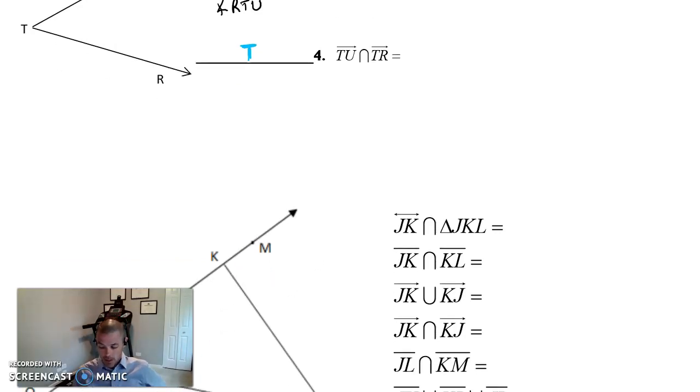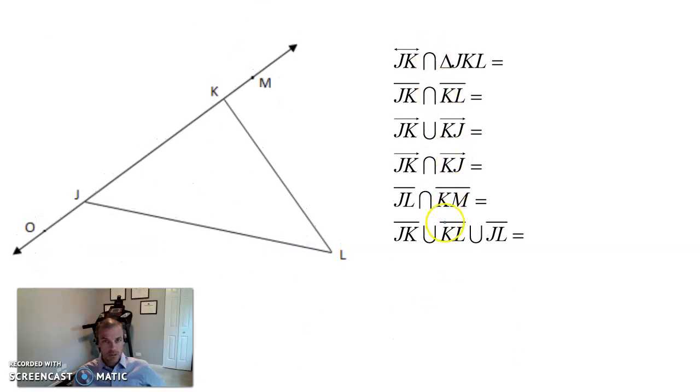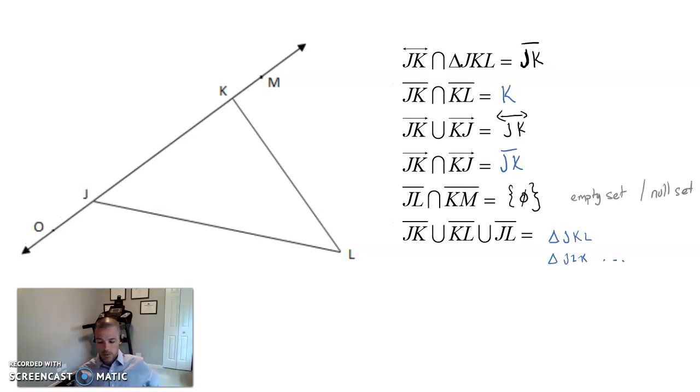All right, next, go ahead and press pause again and try to find all of these unions and intersections here. Again, press pause, unpause when you're ready to check your work. All right, and go ahead and reading this again. Line JK, so that's this whole line here, and triangle JKL,